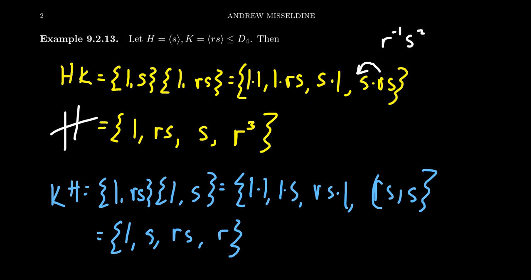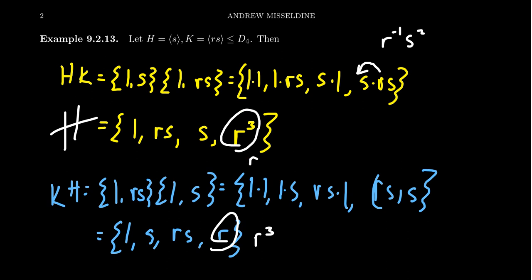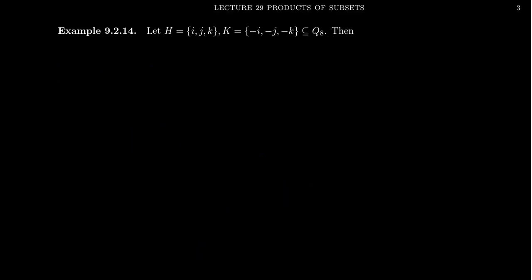It should also be mentioned that even if H and K are subgroups, the subset HK is not necessarily a subgroup. For example, in KH, r doesn't have its inverse r³ present. So the product of two subgroups is not necessarily a subgroup — all we're saying is that the product of sets will be a set inside of the group. Let's do another example: the quaternion group on eight elements.